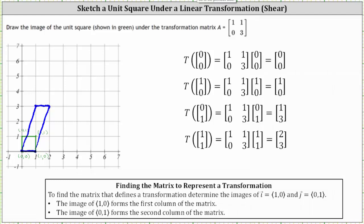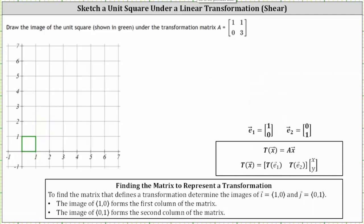The other approach would be to recognize that because we have the transformation matrix A, the first column is the transformation of the vector E₁ or the vector (1, 0), and the second column is the transformation of the vector E₂ or the vector (0, 1). So because we have the transformation matrix, we know the transformation of E₁, which is the transformation of (1, 0), is equal to the first column, which is still the vector (1, 0).